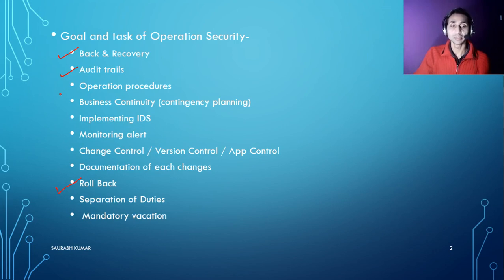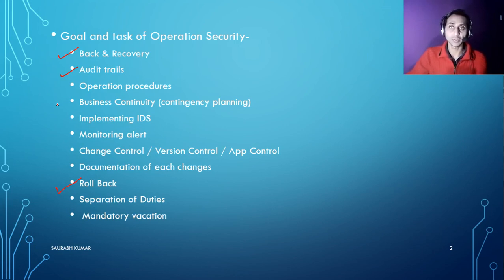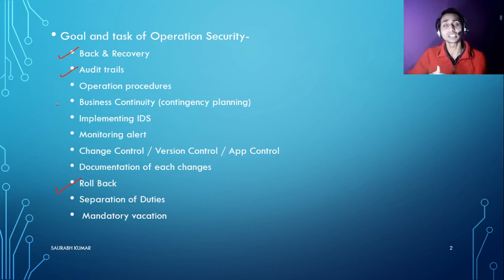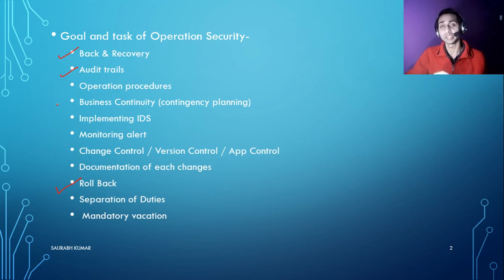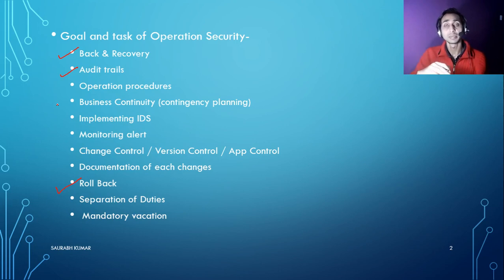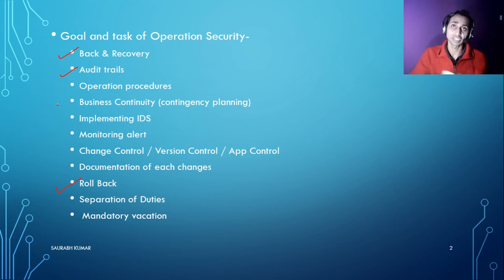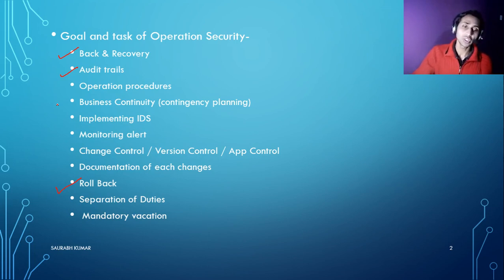Next is operation procedure. Whatever you are planning to implement, you must follow a proper procedure. For example, if a programmer decides to deploy a new version of a program, they must first consult their senior, who checks for bugs, creates a restore point, and ensures the change introduces no new vulnerabilities. After that it goes to the change control team, who decide the minimum requirements for the update, what effect it will have on running services, and whether there is compatibility with the operating system.